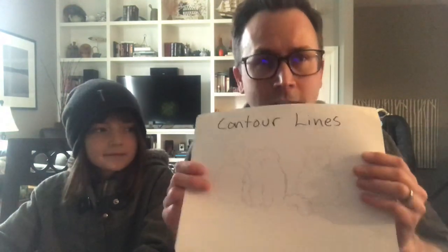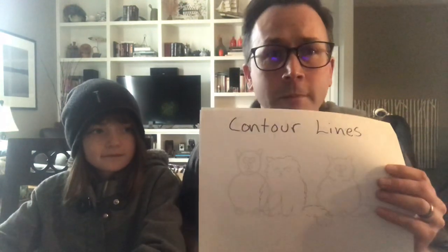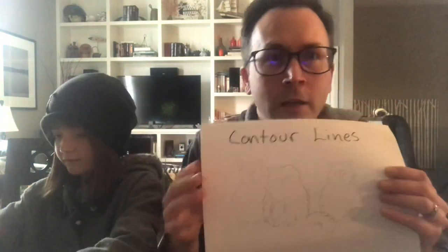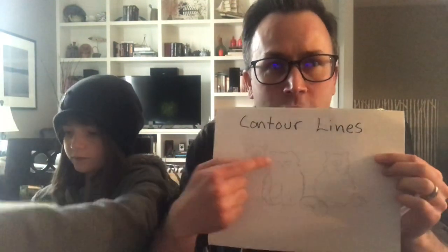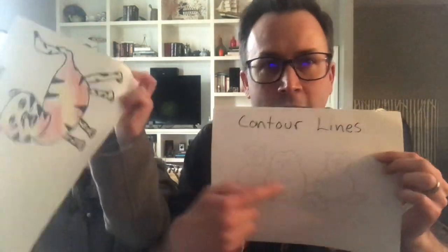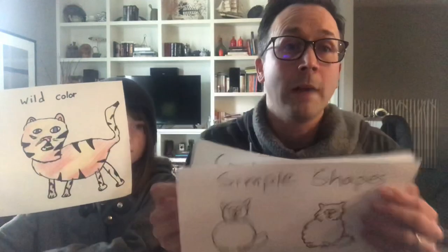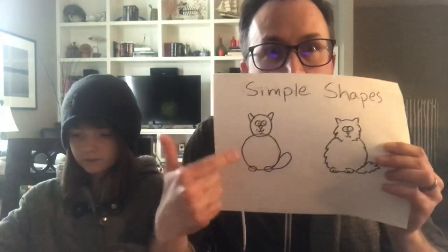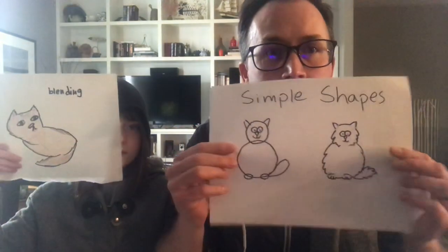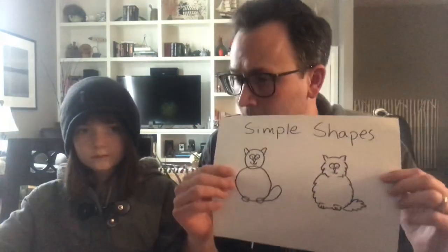What we're gonna look at today is just kind of drawing some basic animals using either contour lines — contour lines means you're just kind of following the edge of something — or my personal favorite, I like to draw with simple shapes. Take simple basic shapes that we all know and love and then we can kind of turn it into something. Kalo's gonna draw along with me here just to demonstrate the different ideas.